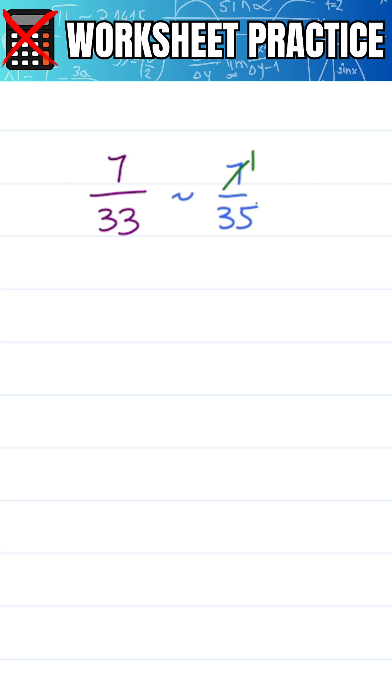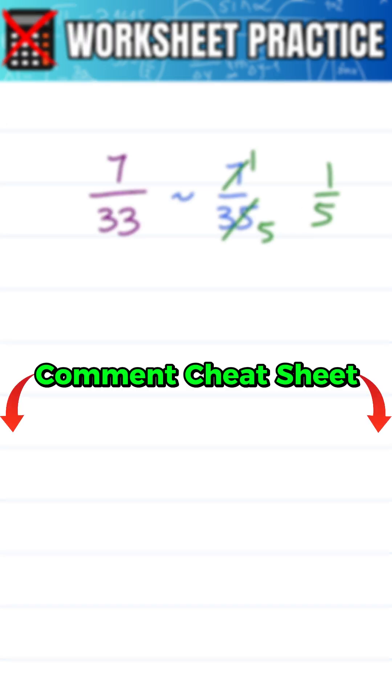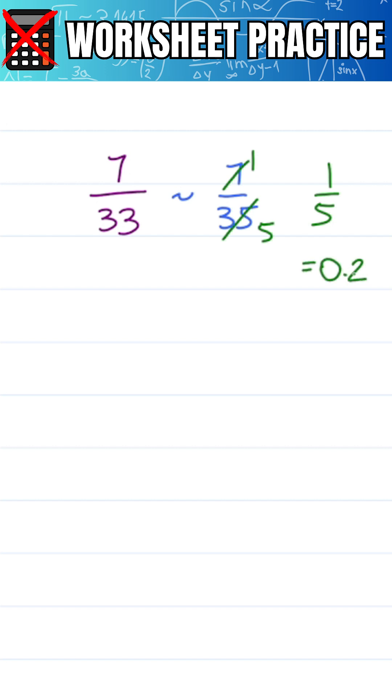7 divided by 7 is 1. 35 divided by 7 is 5. 1 over 5 is the fraction that you should know. Comment cheat sheet if you want the full list, which is equal to 0.2. To turn that into a percent per 100, you have to multiply by 100, moving the decimal two times to the right, which gives me 20%.